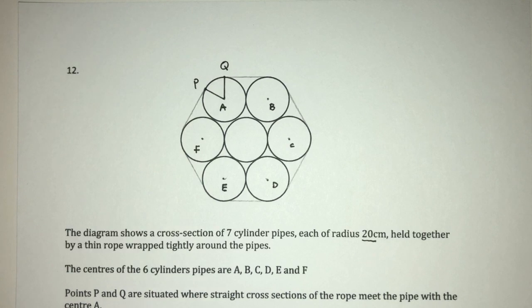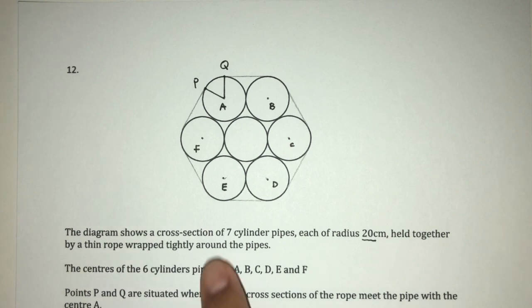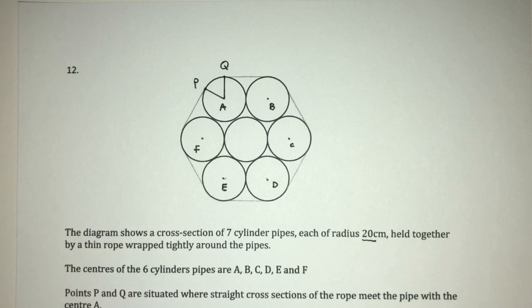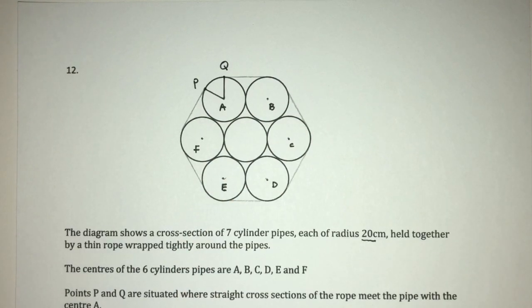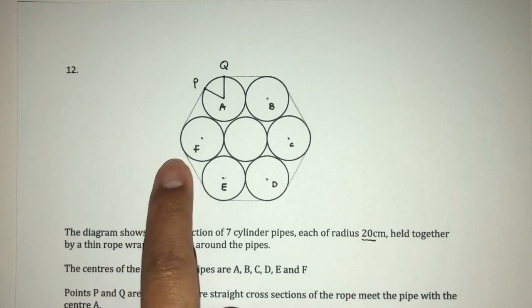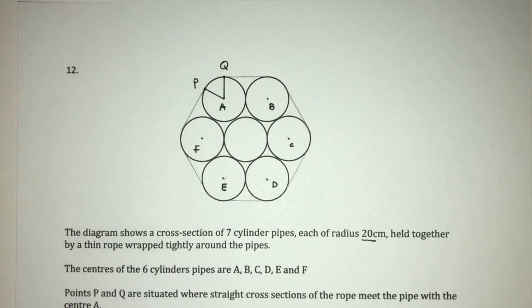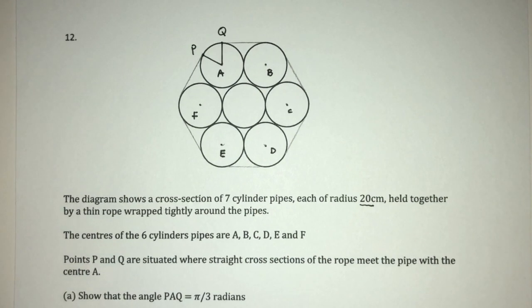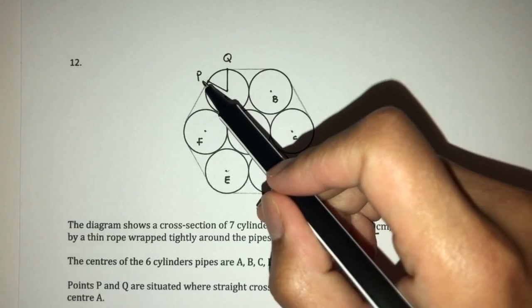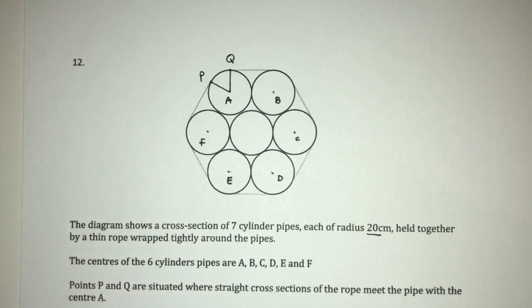The diagram shows a cross-section of seven cylinder pipes, each of radius 20 centimeters. They are held together by a thin rope wrapped tightly around the pipes. Basically here you can see we have seven circles of equal size. In the center we have a full circle and around we have six circles. Now, we have this thin rope which wraps tightly around these pipes. The centers of the six pipes are A, B, C, D, E, and F. The points P and Q are situated where a straight cross-section of the rope meets the pipe with center A. As you can see here, we have the points P and Q on the diagram.